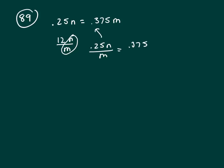And now let's divide both sides by .25. So that leaves me n over m equals .375 over .25.